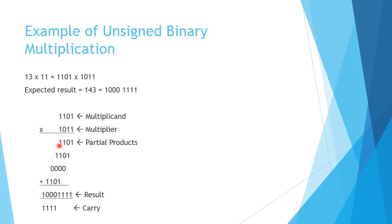Then we start our addition. We have 1 plus nothing, which is 1. We have 1 plus 0, which is 1. We have 1 plus 0 plus 0, which is 1. We have 1 plus 1 plus 0 plus 1 — three 1s makes 3, which is 11 in binary — keep the 1 on the right, carry the 1 on the left. Then 1 plus two 0s plus the carry gives 1. Then 1 plus 1 is 2: keep the 0, carry the 1. This continues, and our final result is 10001111, which equals our expected result, 143.